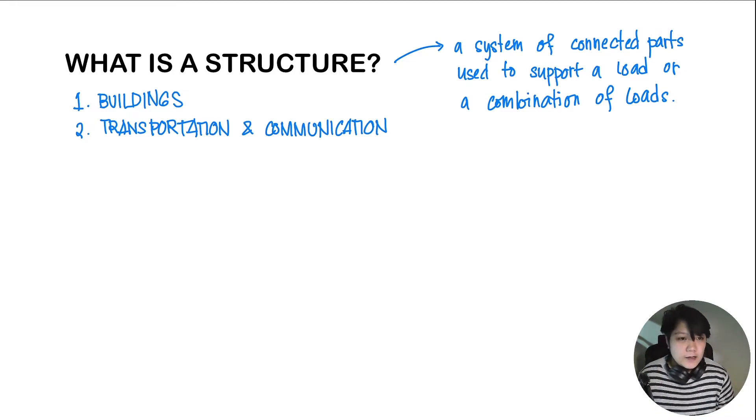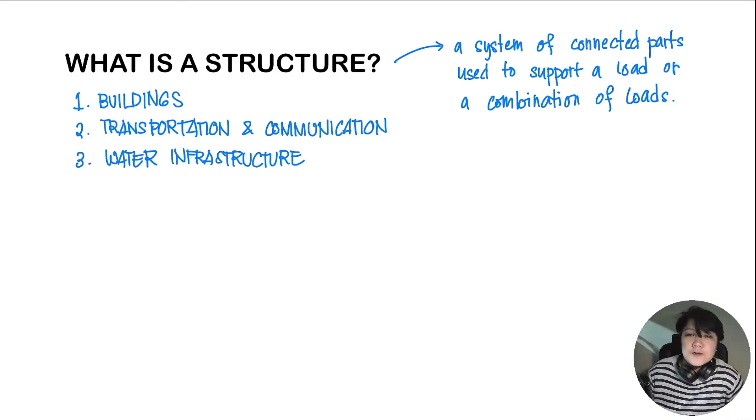The next type of civil engineering structure would be our water infrastructure. Under our water infrastructure, we have our water supply lines, drainage lines, pumping stations, treatment facilities, treatment plants for wastewater, and also for the water that we get in our houses. We also have infrastructure for irrigation, our canals and barrages, and our dams and reservoirs.